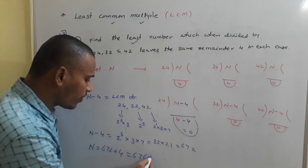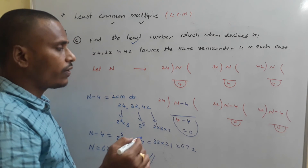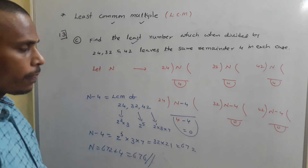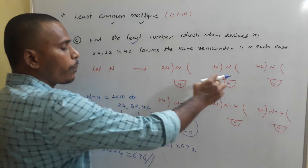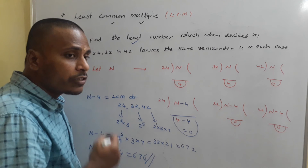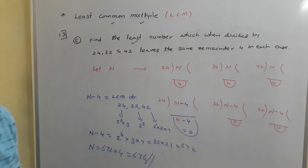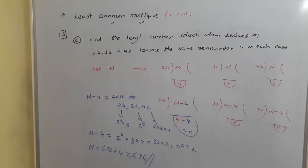N − 4 = 672, so N = 672 + 4 = 676. The answer is 676. These division representations help us analyze the problem and from there we conclude that our answer is 676.